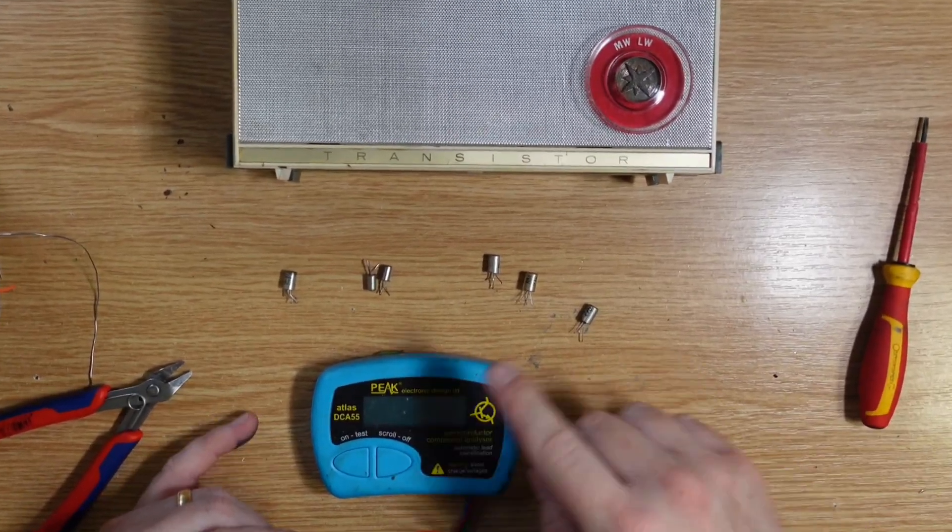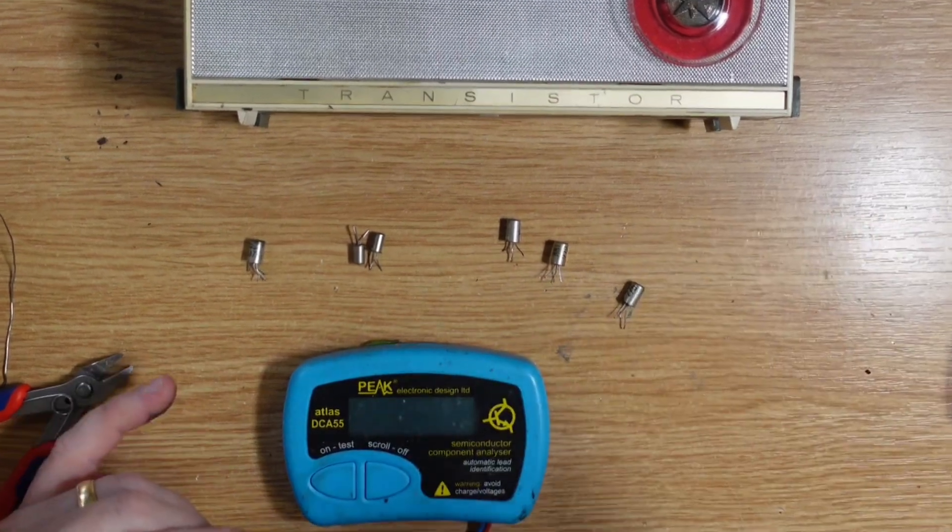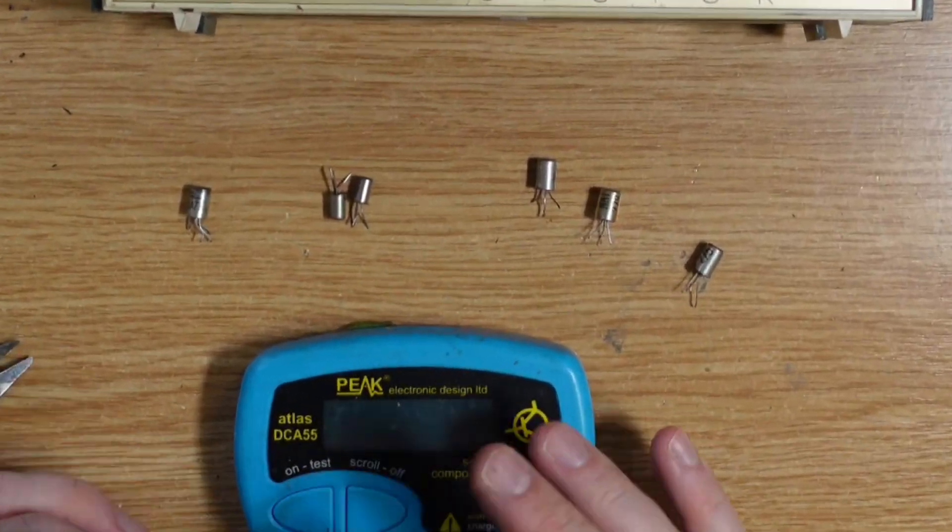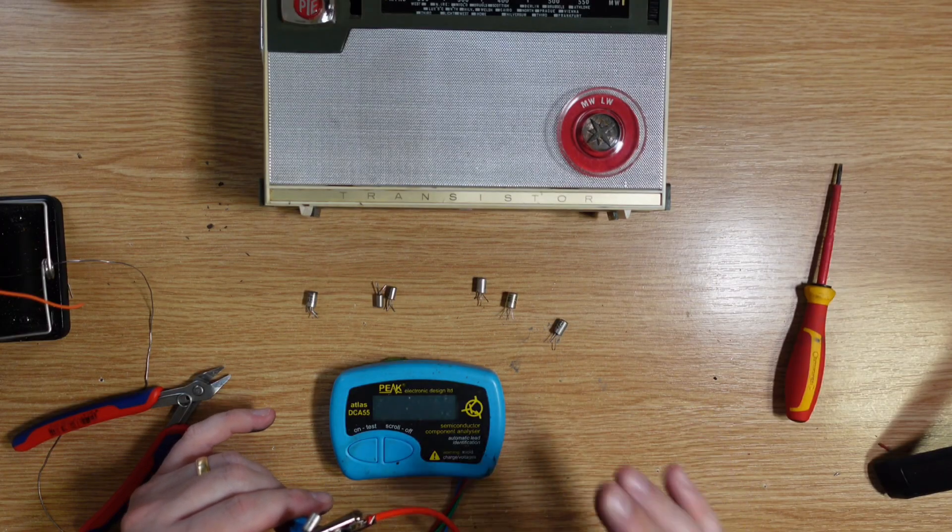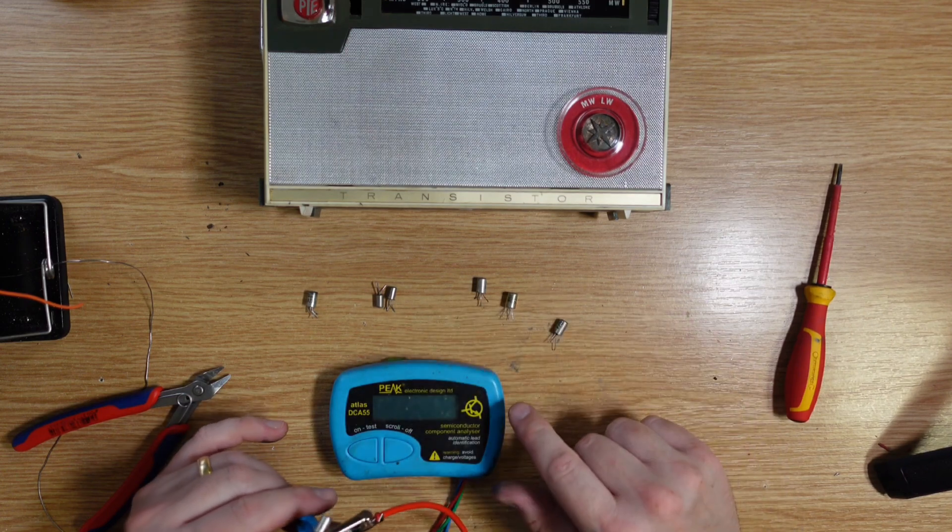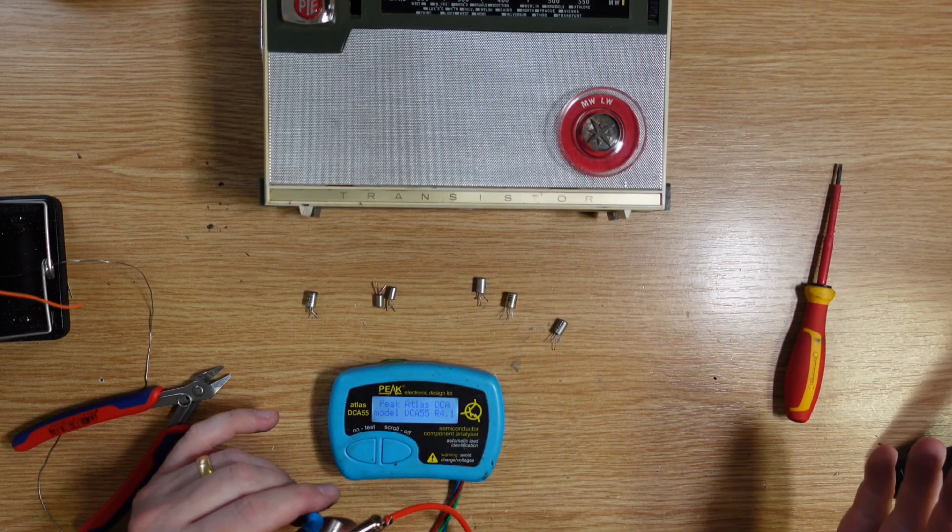That was quite an exciting haul. As you can see, I've got a myriad of transistors here. Four NKTs in total. I'm really happy with that. And they're the four I'm going to test now. First of all, we've got the NKT 271.